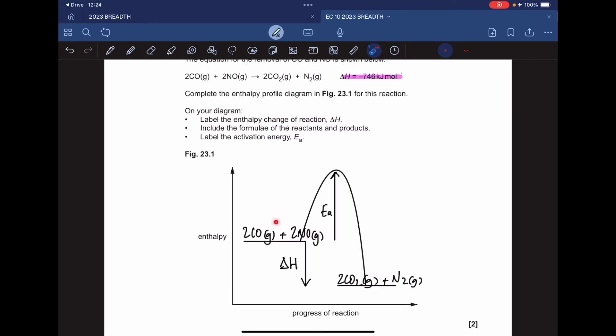Full formula of the reactants on this line, full formula of the products on this line. The delta H is a downward arrow because it's exothermic, from reactants to products. The activation energy EA is an upward arrow from the reactants to the peak of the curve.